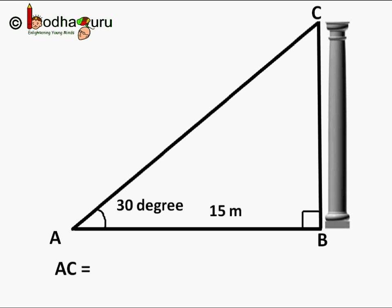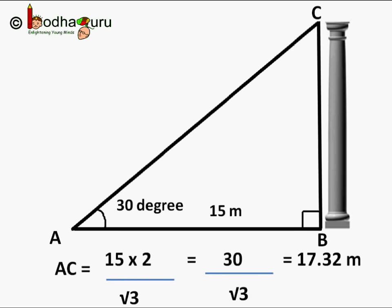So AC is equal to 15 into 2 by square root of 3. That is 30 by square root of 3. Square root of 3 is approximately 1.73. So AC is equal to 30 by 1.73 which is 17.32 meters.